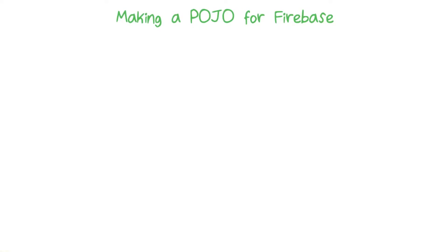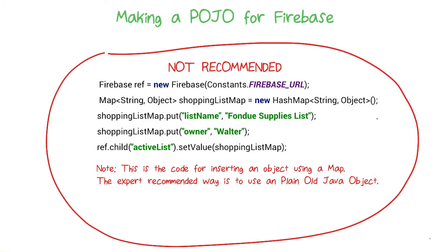When you're working in Java and storing data, you might find that it'd be really great if you could just save an object to the database. In this case, you'd really like to store a shopping list object which has a name and an owner to start. Now, it is possible in Firebase to make a hash map with a collection of key-value pairs, and then you can use that hash map to change your data in Firebase.